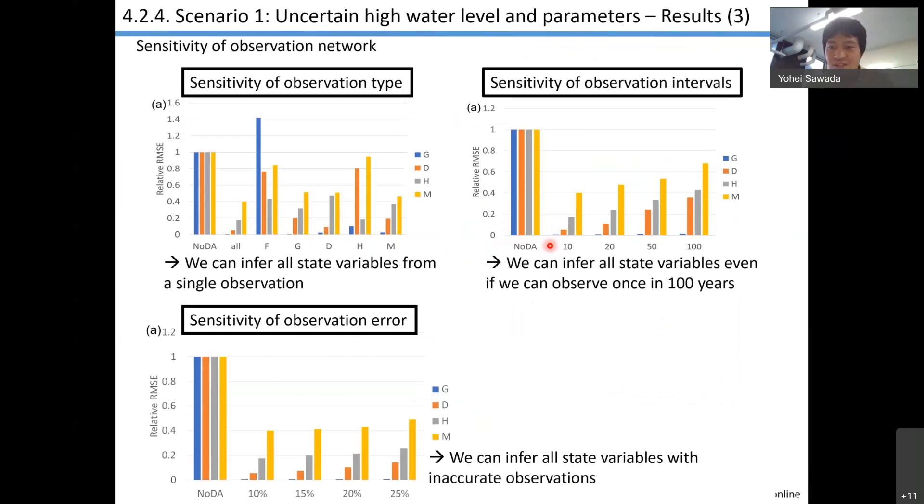This figure shows the sensitivity of observation network to the results. Even if we have observation of only single state variable, that's going to reduce the RMSE. Even if we have observation only once in 100 years, we can dramatically reduce the RMSE. Even if the observation error is huge, we can dramatically reduce the RMSE. This is really good news because we cannot expect dense observation in the socio-hydrological domain. Observation must be sparse, but by assimilating that kind of sparse observation network, we can effectively constrain the model trajectory. This is really promising.